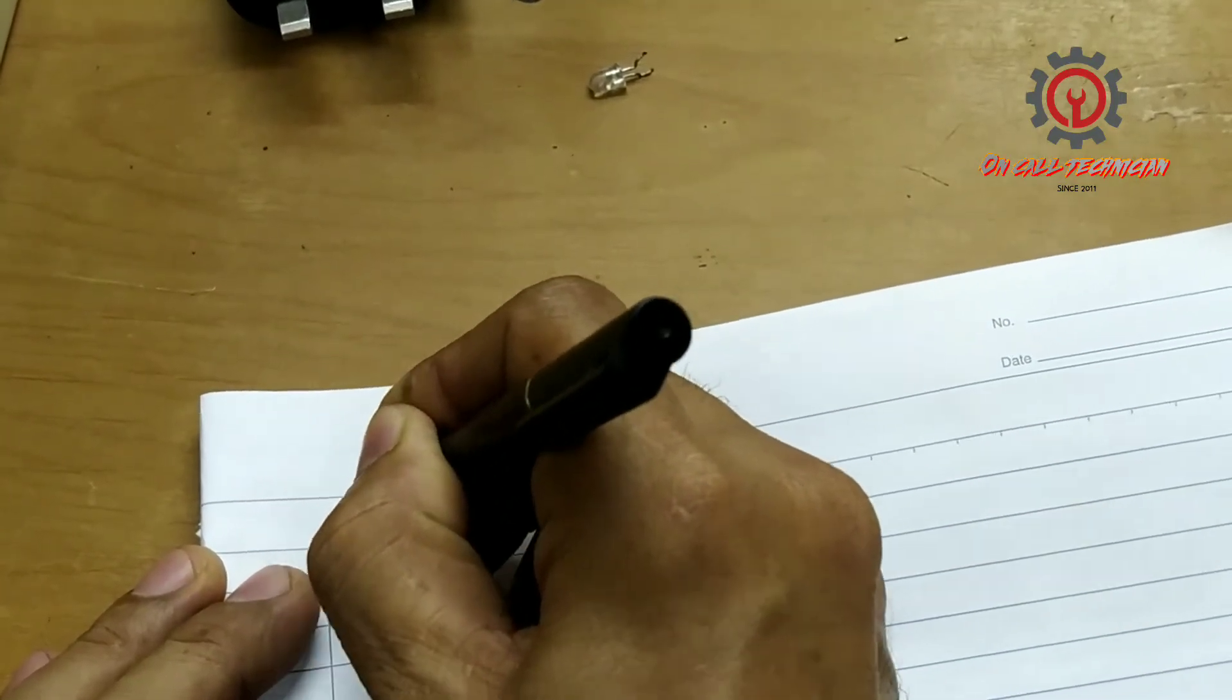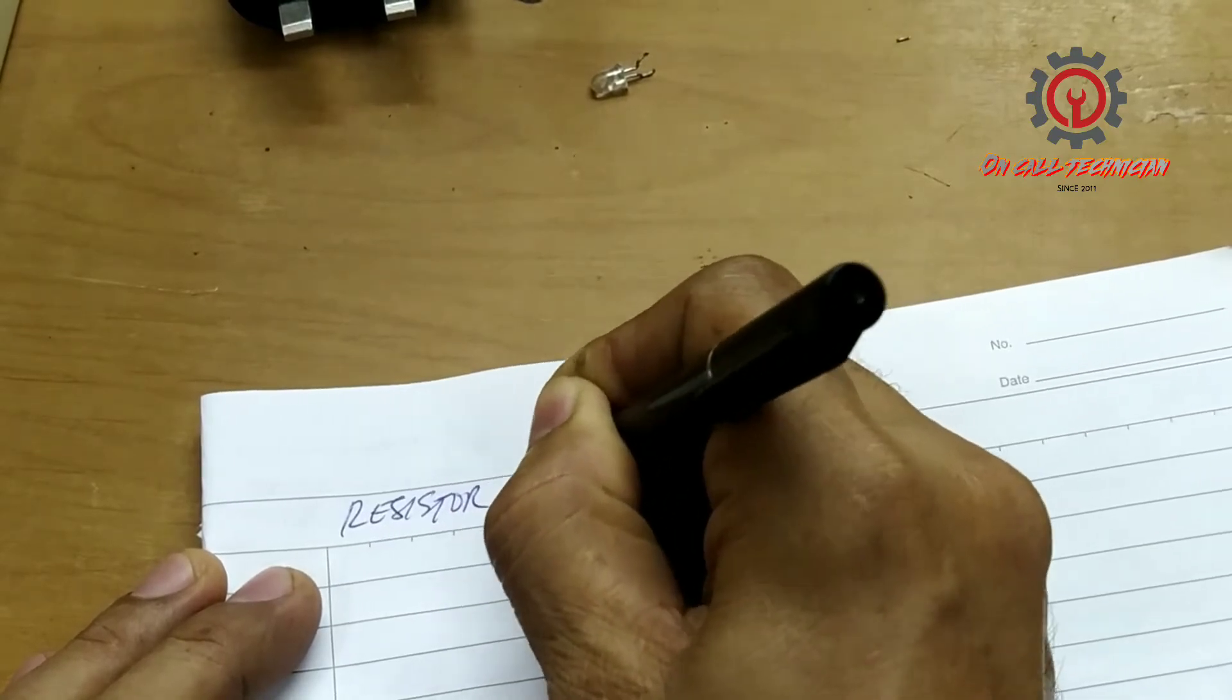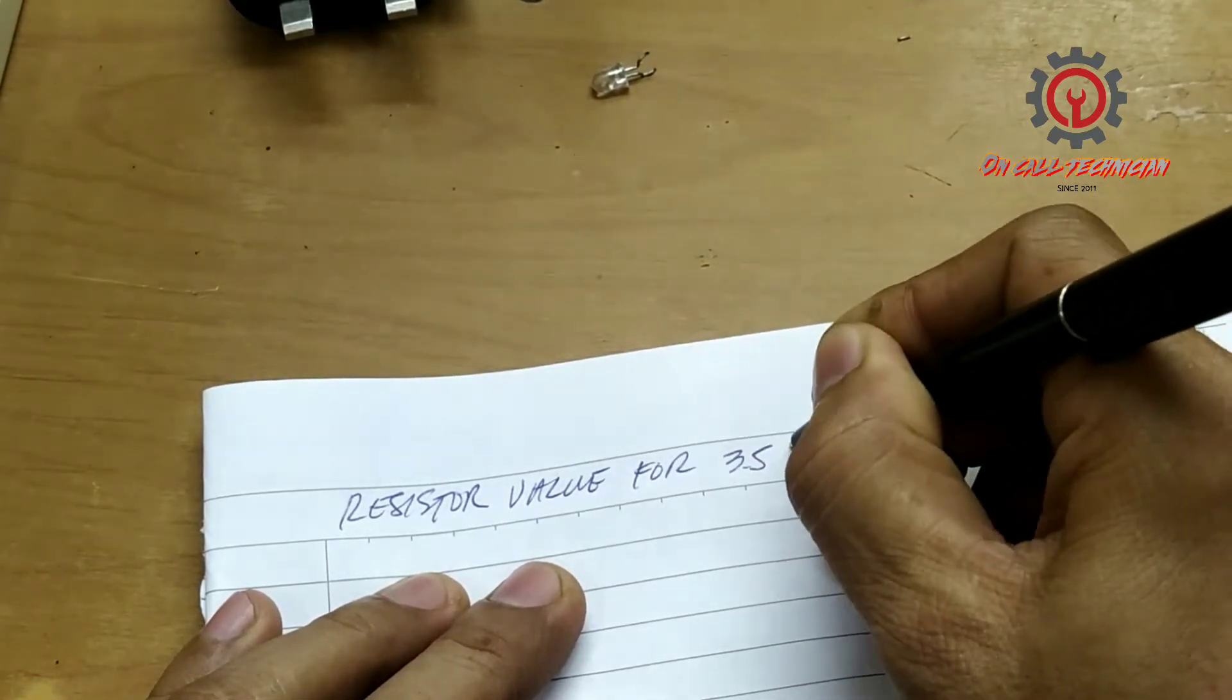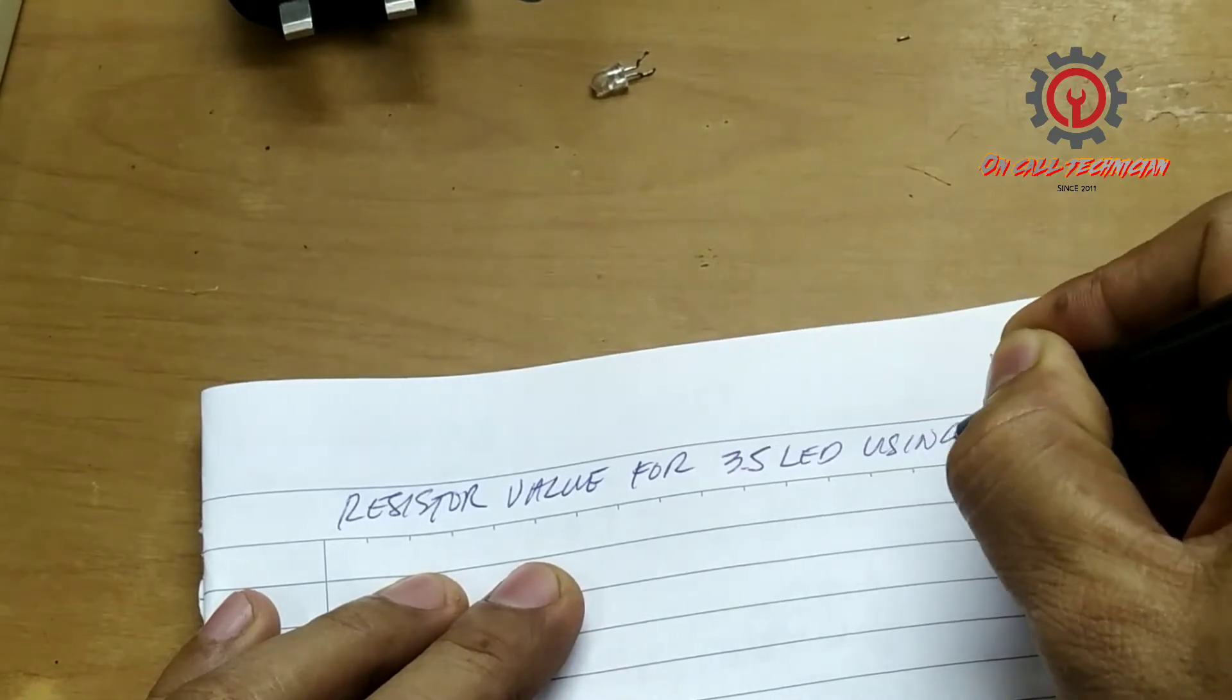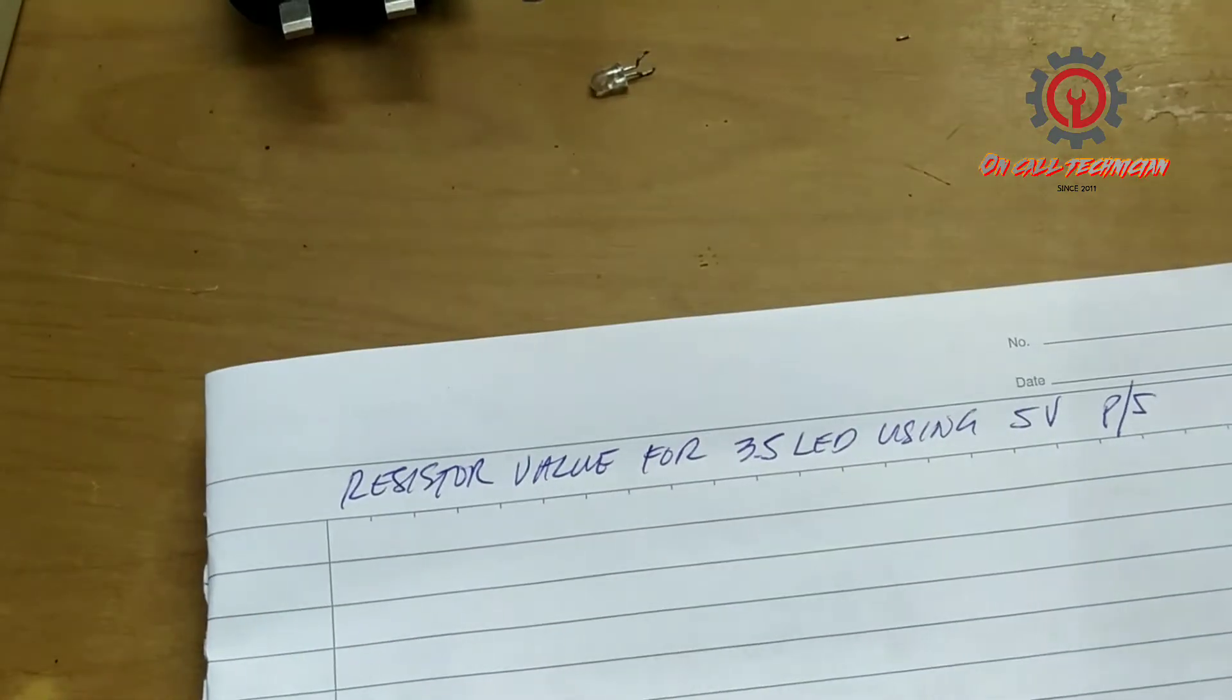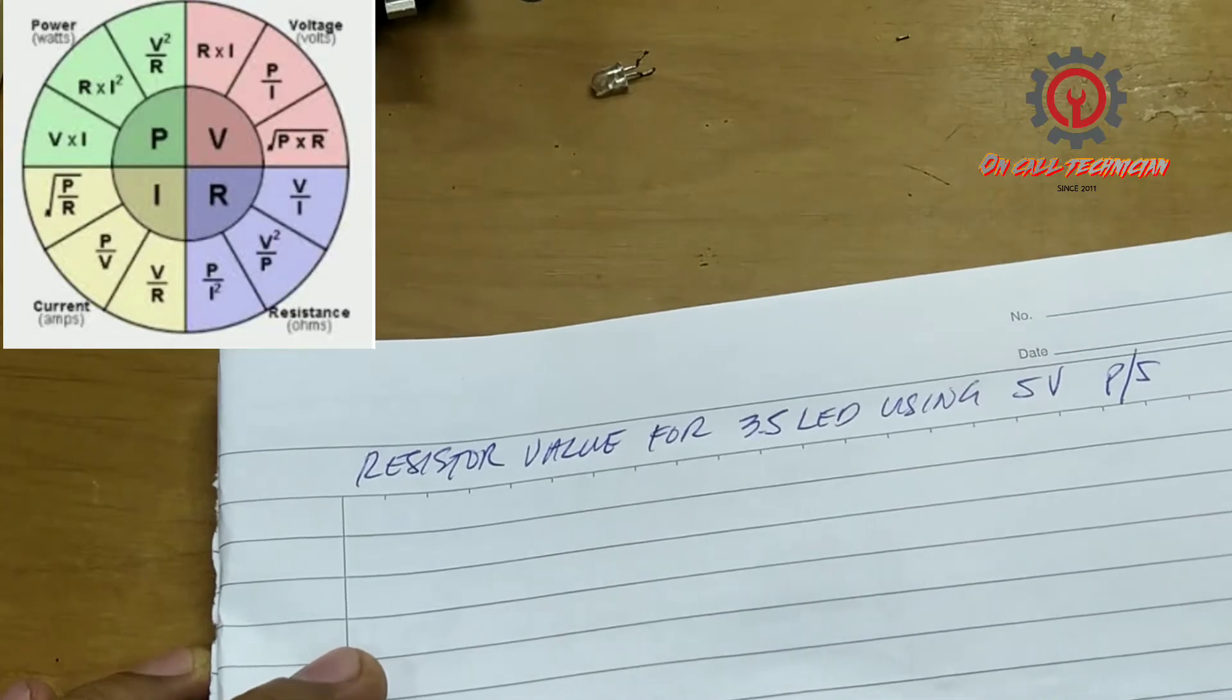So the question should be like this: resistor value for 3.5 LED using 5 volts power supply using Ohm's law guys. The formula should be...